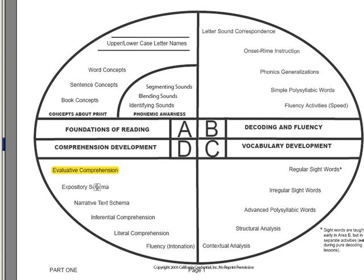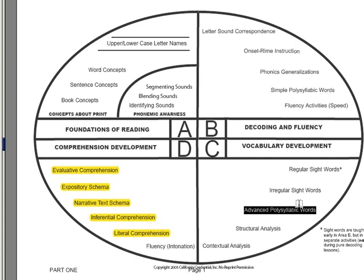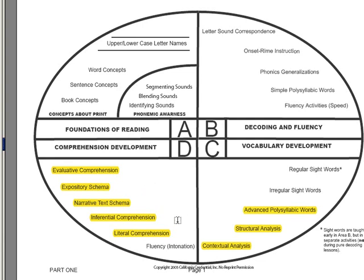The way that we do that is by ensuring that they understand and can read expository schema when they encounter it and narrative schema when they encounter it. We will have a child who has evaluative comprehension if they're able to answer inferential and literal questions posed to whatever type of text they happen to be reading. We also have to make sure that they are able to work with advanced polysyllabic words, do things like structural analysis and etymology — especially for expository text — and use context effectively when they read, so that they can ultimately achieve the ability to evaluate a text.